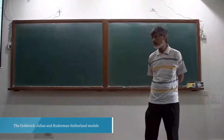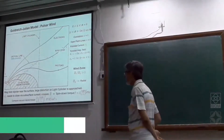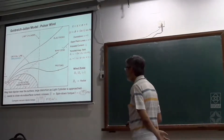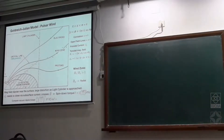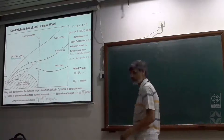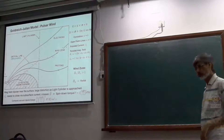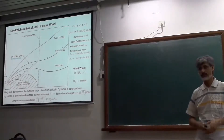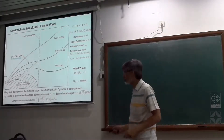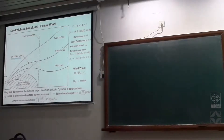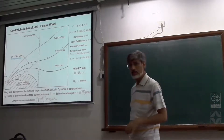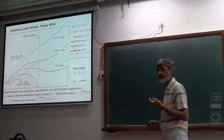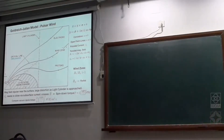To recall: in the Goldreich-Julian picture, you have a corotating magnetosphere where the Goldreich-Julian charge density is populated everywhere and it corotates. There is no net motion of charged particles along the field lines. This corotation gives you an azimuthal current, and this azimuthal current actually adds to the magnetic moment of the star. So the field lines will look slightly different from the original dipole field lines because of the field produced by the azimuthal current.